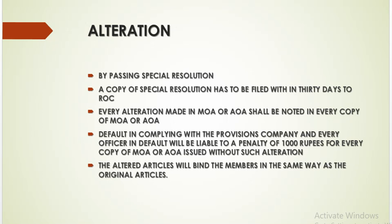What is the procedure of alteration? By passing a special resolution — special resolution means 75% of the votes should be in favour of passing the alteration. A copy of the special resolution has to be filed within 30 days to the Registrar of Companies. Every alteration made in the memorandum of association or article of association shall be noted in every copy of the memorandum of association or article of association.